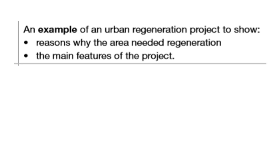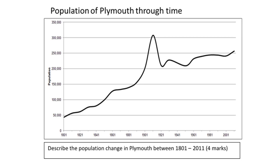We'll answer those two bullet points in this video. Before we get into the regeneration itself, I'm just going to show you this line graph of the population of Plymouth through time. Obviously the x-axis is missing, which should say 'date.' Hopefully you can identify that since 1801 the population of Plymouth has increased, although there have been fluctuations and also areas of decrease within this graph.